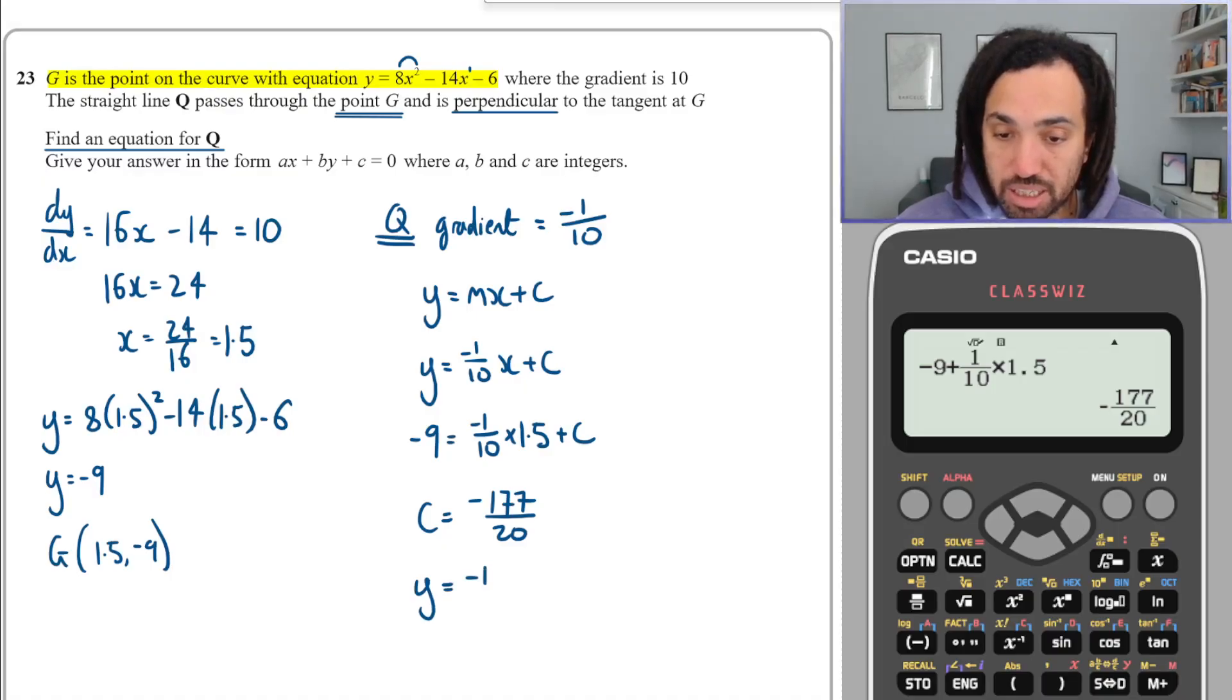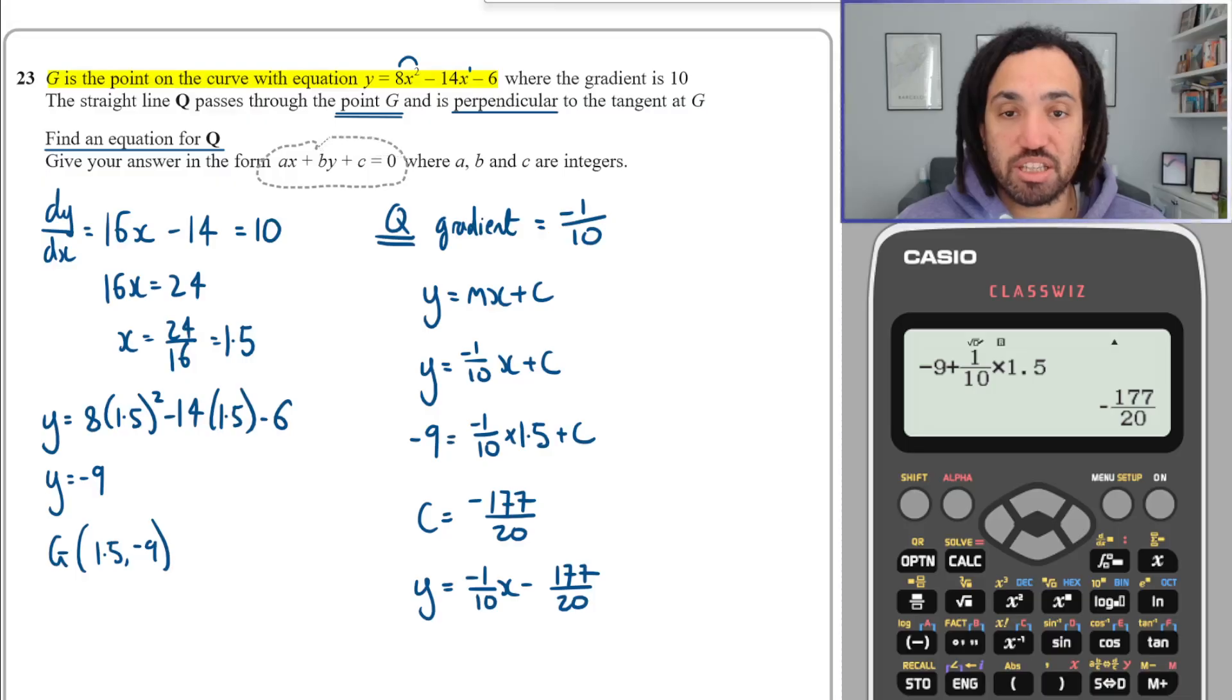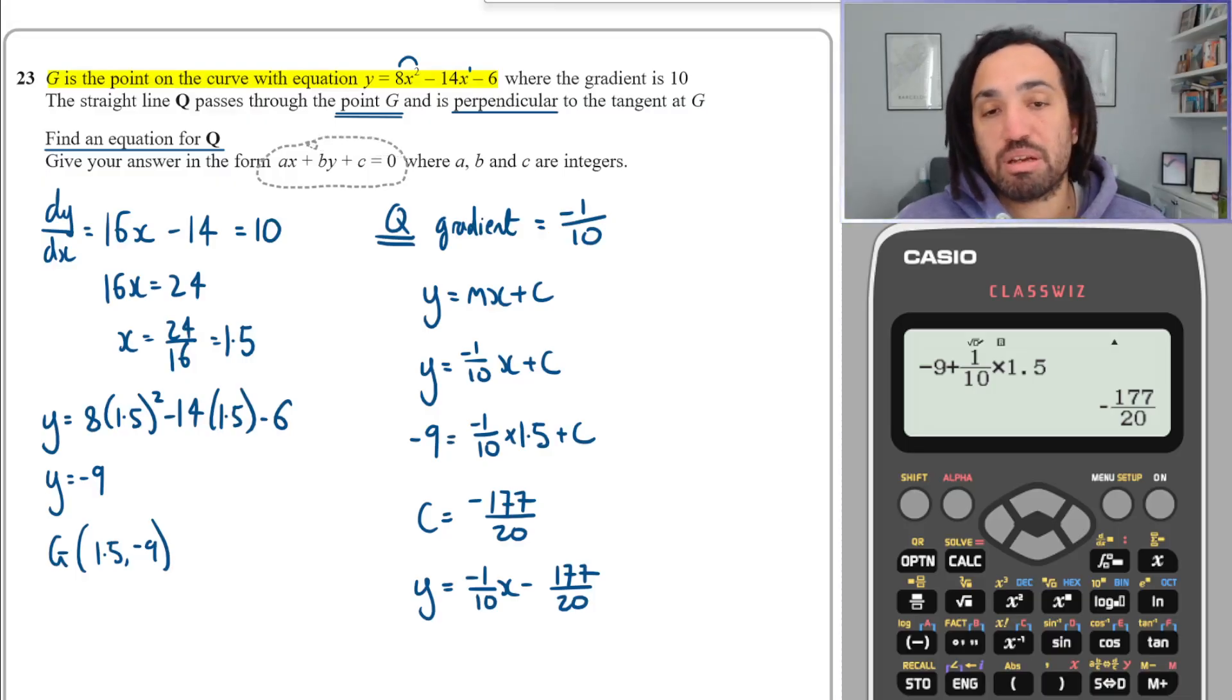So we get c = -177/20. I can rewrite my equation now like this: y = -1/10 x - 177/20. You might be thinking I'm done, but it does say here that it wants it in this particular form, which means I need to make sure all my coefficients are integers.